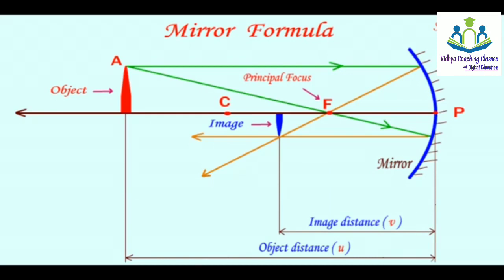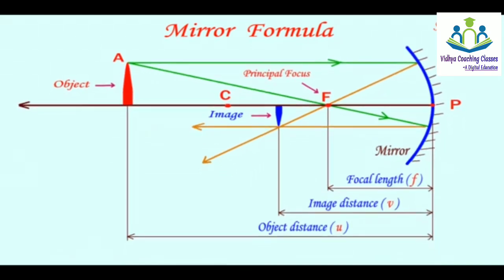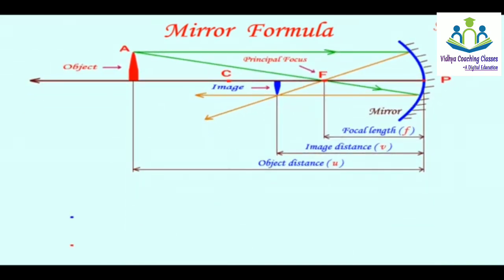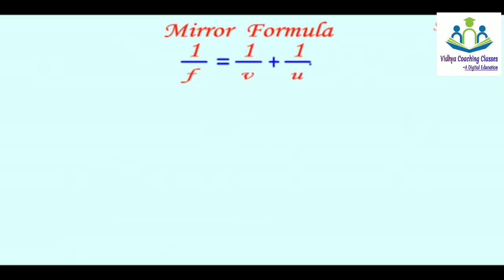Second is image distance. The final mirror formula is 1 upon F equals 1 upon V plus 1 upon U.